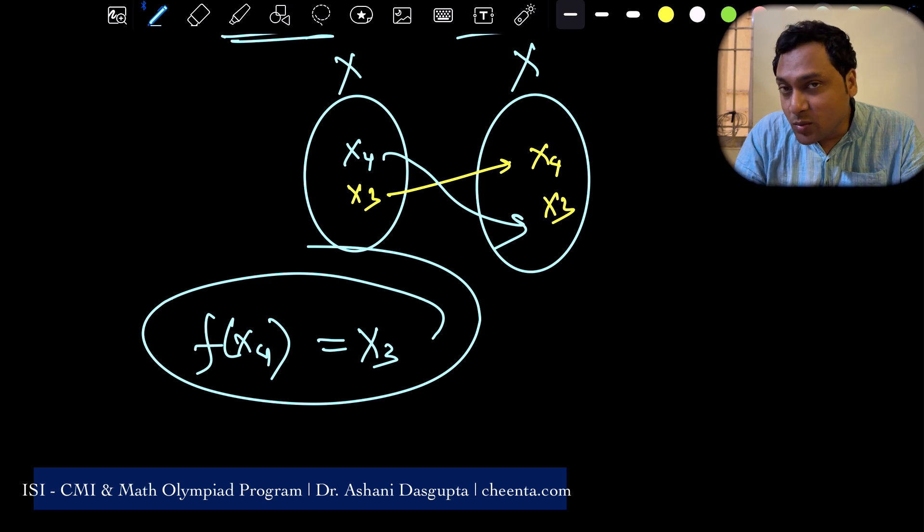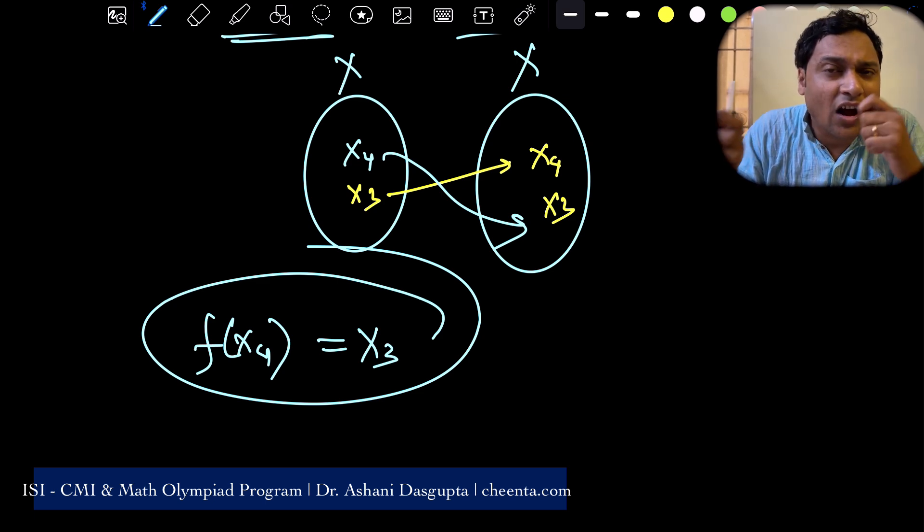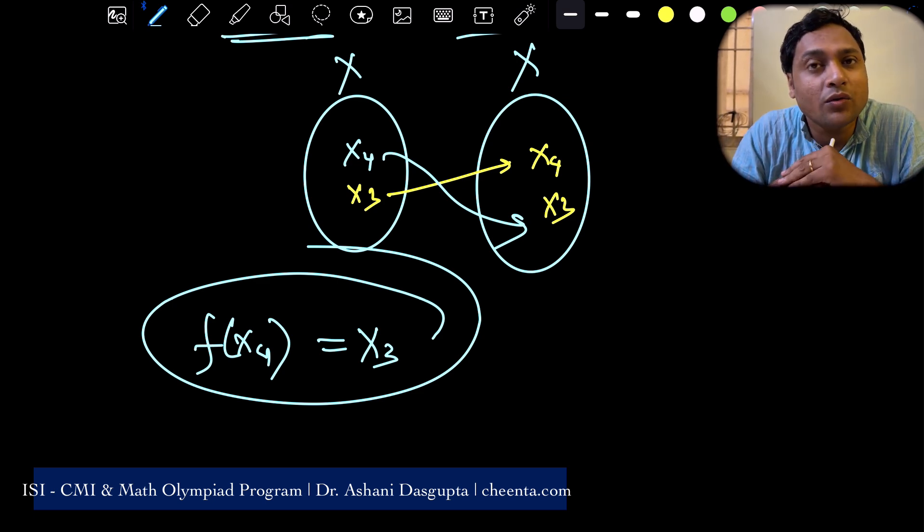So, the function is also onto. The function is one to one. The function is also onto. This is how you analyze whether a function is onto or not.